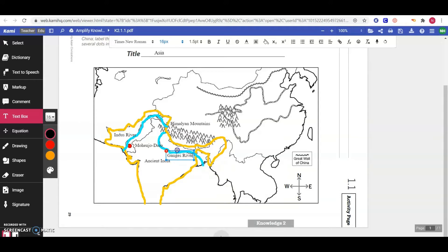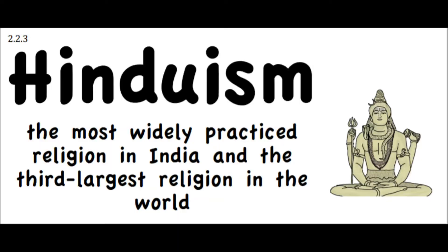We are also going to label it so we don't get it confused with the Indus River. I'm going to do that with a text box and set it right next to it. That is it for our map quest today — not a whole lot that we're adding today. Let's learn a little bit about this religion. We're going to learn about Hinduism.